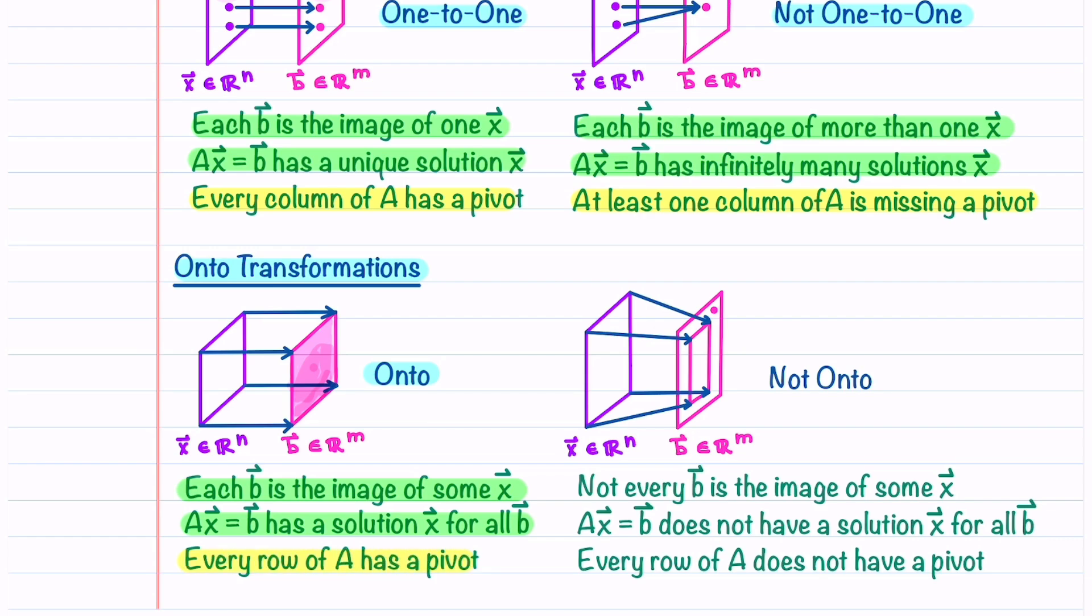If a transformation is not onto, not every b is the image of some x and Ax equals b does not have a solution x for all b. You can see in this figure that there is no solution x that maps to that vector b. This means that every row of A does not have a pivot.